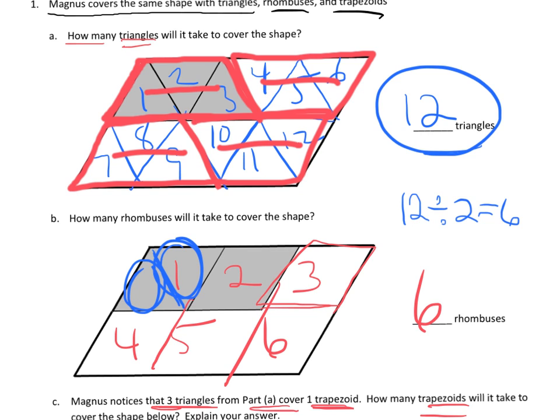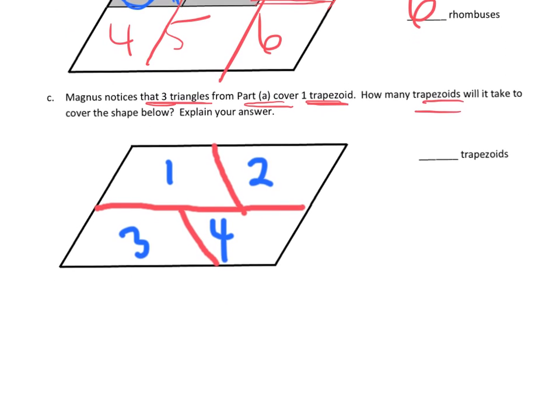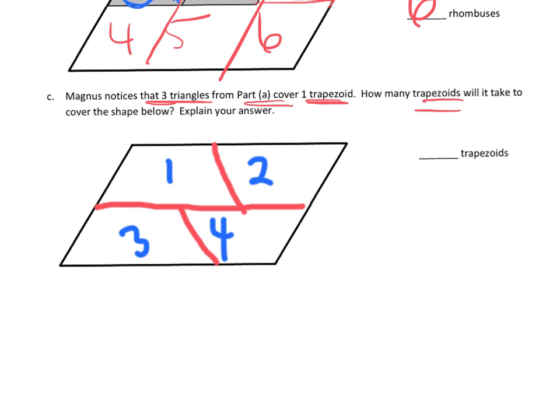And then one last way to do it would be to say, well, we know that the entire shape is 12 triangles. It takes 3 triangles to make a trapezoid. So 12 divided by 3 is 4 trapezoids. So we have a couple of ways that we could do that one.